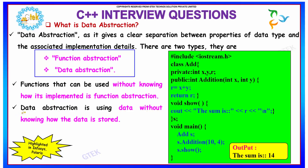Data abstraction is nothing but using the data without knowing how the data is stored. Here, if you see, x, y, and r are of type int, but that is not needed in order to know how the function works.